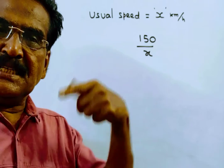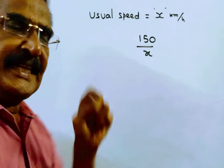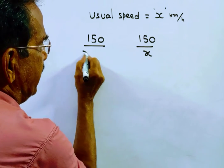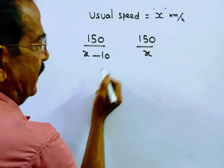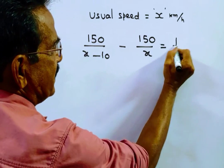If the speed is 10 km/h slower than his usual speed, then the time taken is distance by speed, that is 150/(x-10). The difference between these two timings is 30 minutes, that is half an hour.